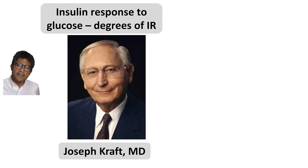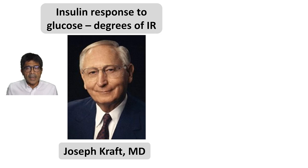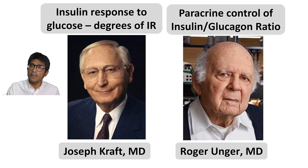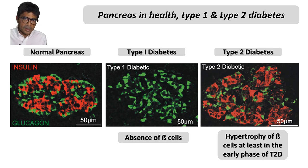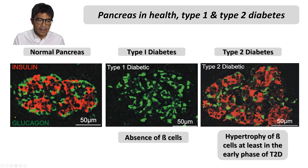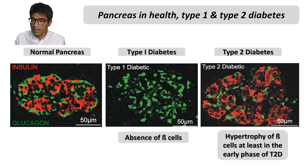The low-carb community has benefited a lot from Dr. Joseph Kraft, who described the insulin response to ingestion of a glucose load. But we also owe gratitude to my hero — Dr. Roger Unger — who has shown us important things the low-carb community can learn from. He described the paracrinology, the juxtaposition between insulin and glucagon. Here is a normal pancreas — insulin-producing cells in red, glucagon in green. Hyperinsulinemia, an early part of type 2 diabetes, is a hypertrophy of the beta cells: they are larger, more in number, and consequently making more insulin.